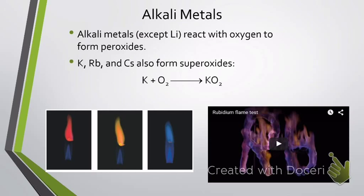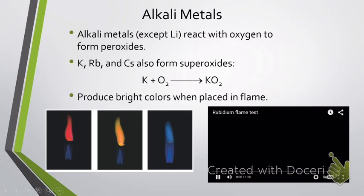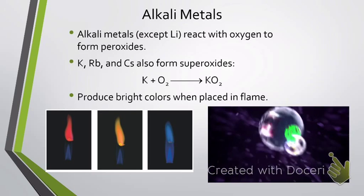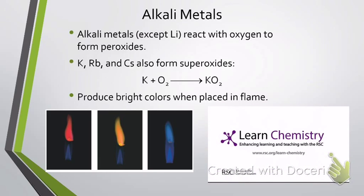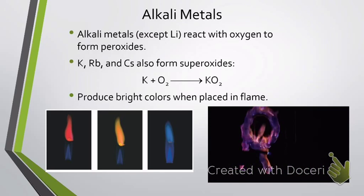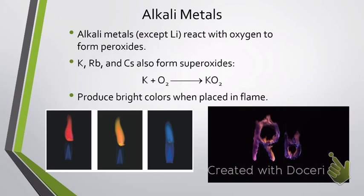Whereas potassium, rubidium, and cesium also form superoxides. One thing the alkaline metals are really known for is that whenever you place them in a flame, they give off bright colors that vary by element. Here's an example of a rubidium flame test, sponsored by the Royal Society. You can see that rubidium burns in a violet color, and they even did it in the form of the chemical symbol for rubidium.